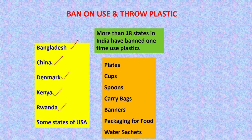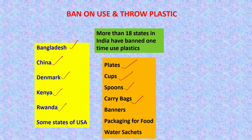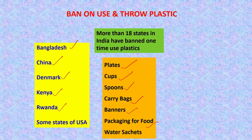In India, more than 18 states have banned single-use plastics, particularly use-and-throw items such as plates, cups, spoons and other cutlery, carry bags, plastic banners, and packaging material for takeaway food from restaurants, and water sachets, among other items.